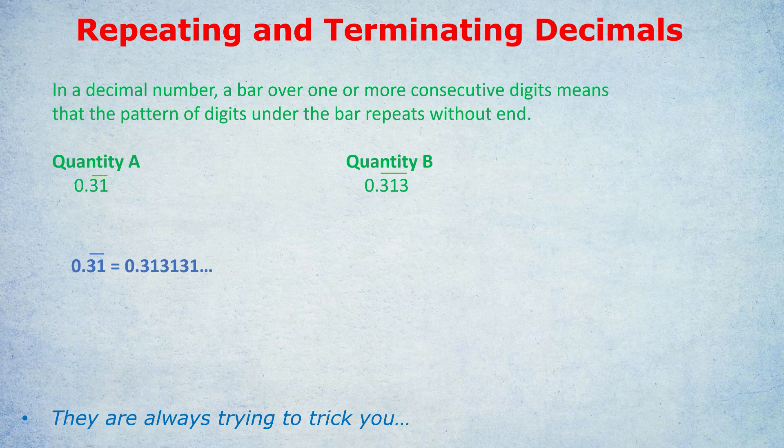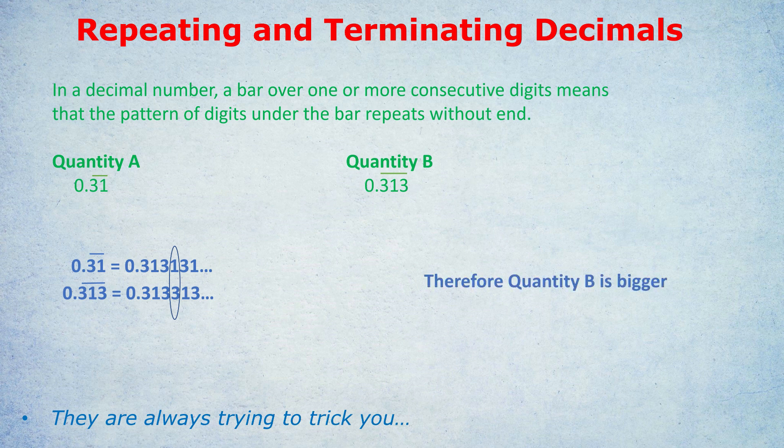And then underneath that, I'm going to encourage you to write quantity B in the same way. But remember, this time it's 313, which is repeating, not just 31. And what you'll notice is a slightly different result. So 0.313 recurring looks like 0.313313313. And you notice something. The number below has a 3 where the number above has a 1, which makes the number below 0.313 recurring slightly bigger. So both quantities aren't the same. Quantity B is actually bigger. So it pays off in this instance to write out the numbers longhand to see which one is actually bigger.